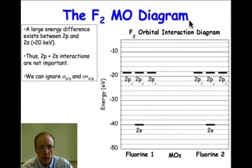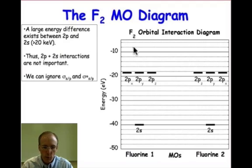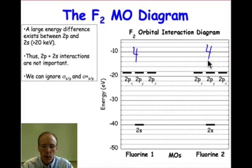In this webcast, we're going to use the ideas of LCAO to construct the molecular orbital diagram of diatomic fluorine. Diatomic fluorine will be the result of combining the four atomic orbitals on fluorine atom 1 with four atomic orbitals on fluorine atom 2 to produce eight new molecular orbitals.